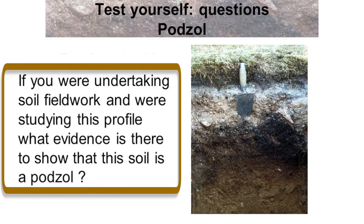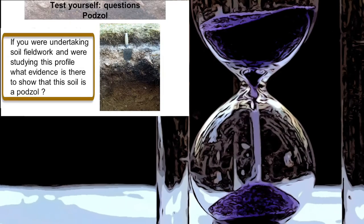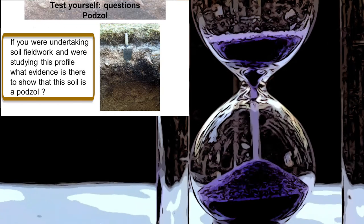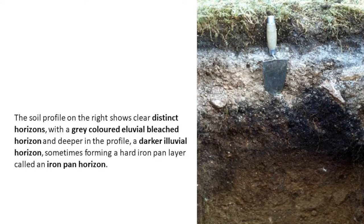If you were undertaking soil fieldwork and studying this profile, what evidence is there to show that this soil is a Podzol? The soil profile shows clear distinct horizons, with a grey-coloured, eluvial bleached horizon, and deeper in the profile a darker illuvial horizon, sometimes forming a hard iron pan. That layer is called an iron pan horizon.